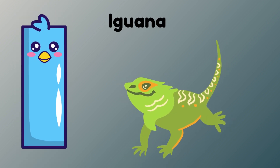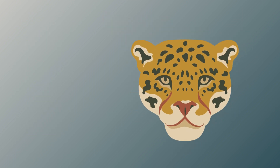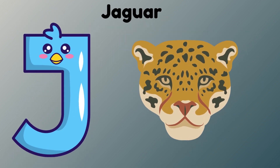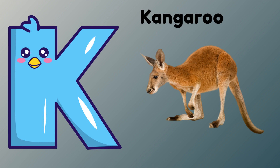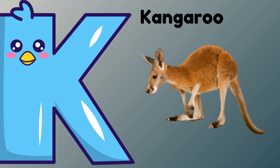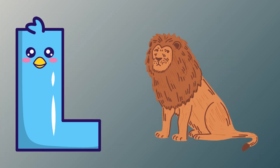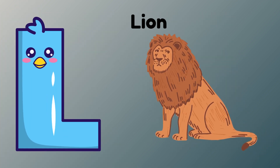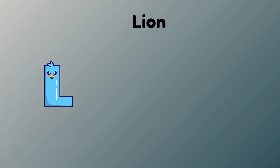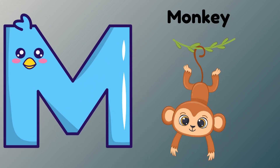I is for Iguana. I. Iguana. J is for Jaguar. J. Jaguar. K is for Kangaroo. K. Kangaroo. L is for Lion. L. Lion.